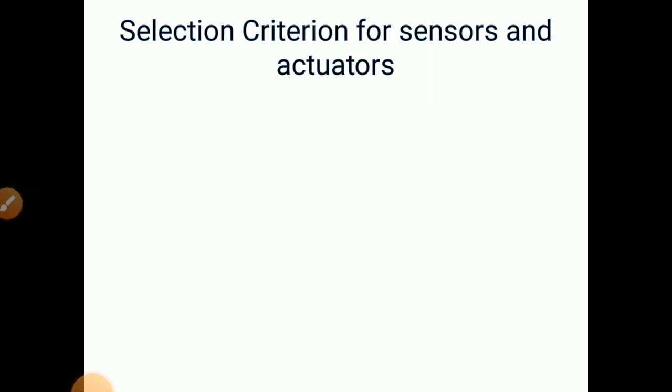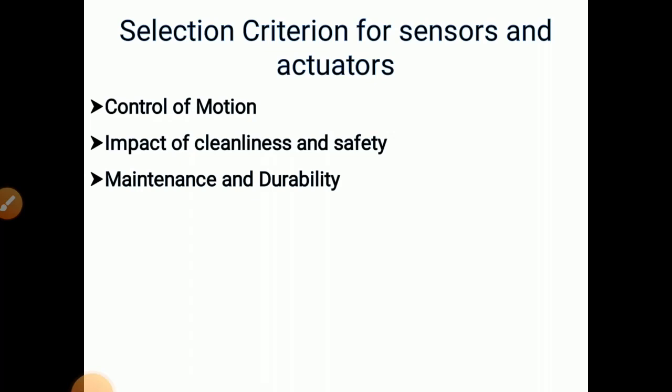So now up to this point, we have studied all types of sensors and actuators. So what is selection criteria for sensors and actuators? First it is control of motion. So how you are going to control the motion, it is linear or rotary, depending upon that we have to select the particular sensor and actuator. So again, point is impact of cleanliness and safety. If we want safety and cleanliness, then we go for electrical actuators because hydraulic and pneumatic creates some unsafety while working. Maintenance and durability is also important. Noise in the environment. Suppose you are using particular actuator or motor and if that motor is making very noise, then it is not suitable for some applications.